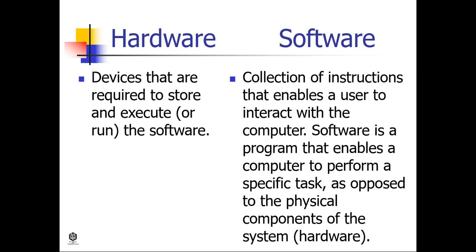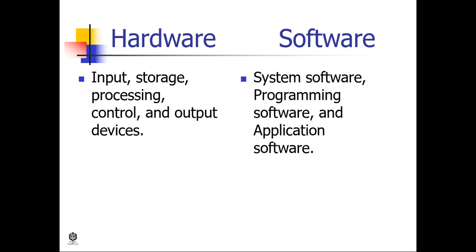Hardware devices are required to start and execute the software, while software is a collection of instructions that enables a user to interact with the computer. Software is a program that enables a computer to perform a specific task, as opposed to the physical components of the system — the hardware. Hardware has input, storage, processing, control, and output devices, while software includes system software, programming software, and application software.